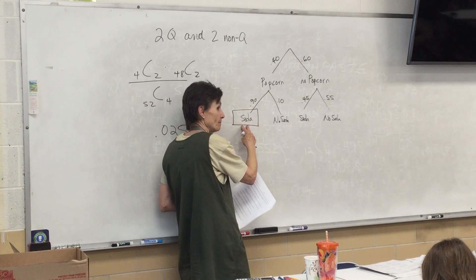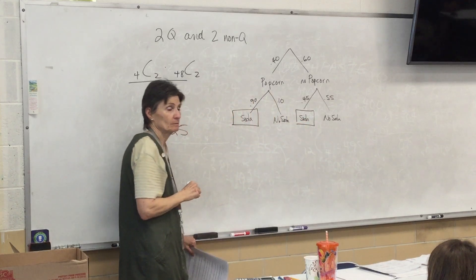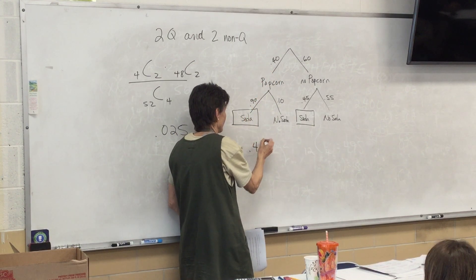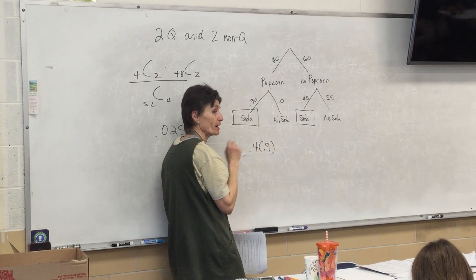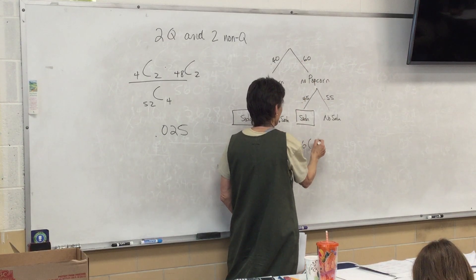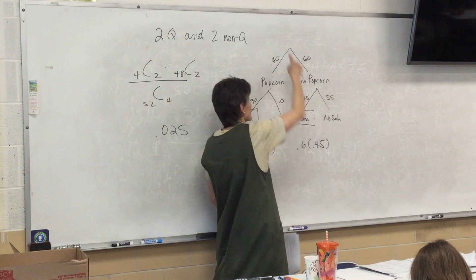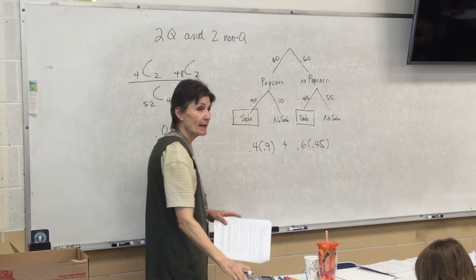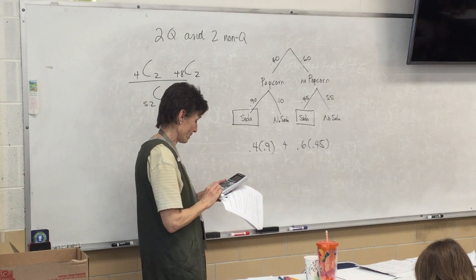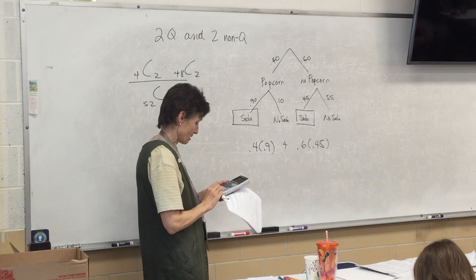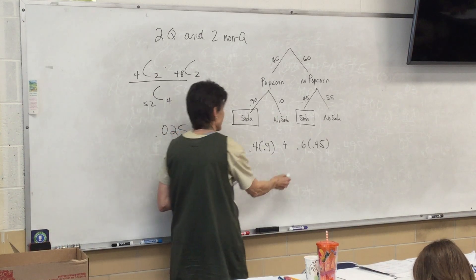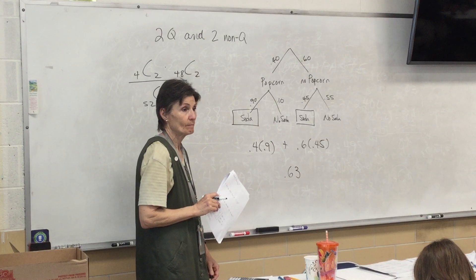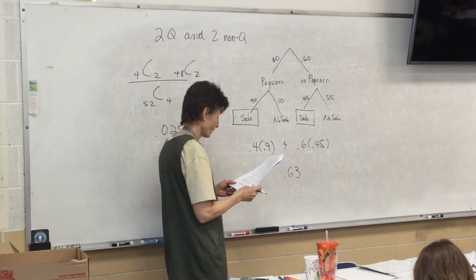Find the probability that they will serve soda. So this is a will serve soda. And this is a will serve soda. So we take 0.4 times 0.9. We take 0.6 times 0.45. Got to start at the top and go all the way down. And then we're going to take these two numbers and add them together. So 0.4 times 0.9 plus 0.6 times 0.45. I got 0.63. You okay with that?